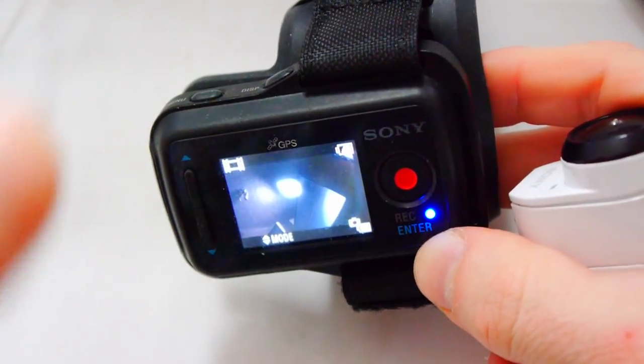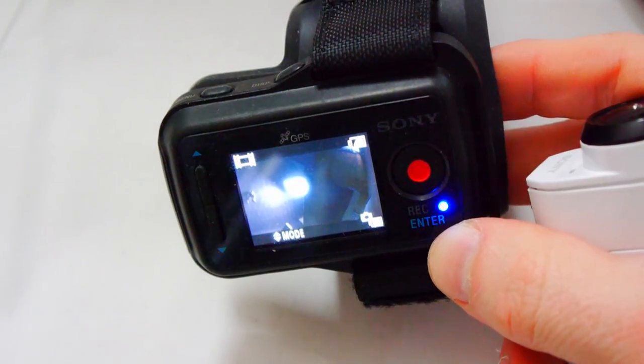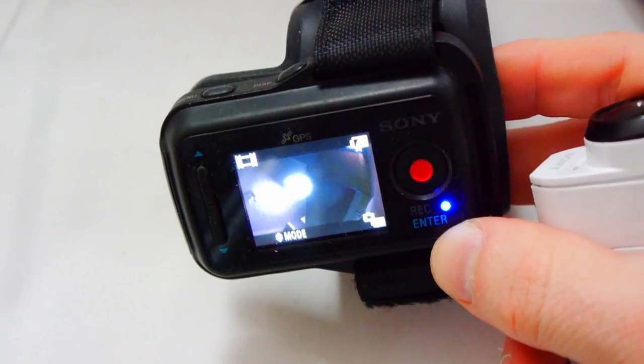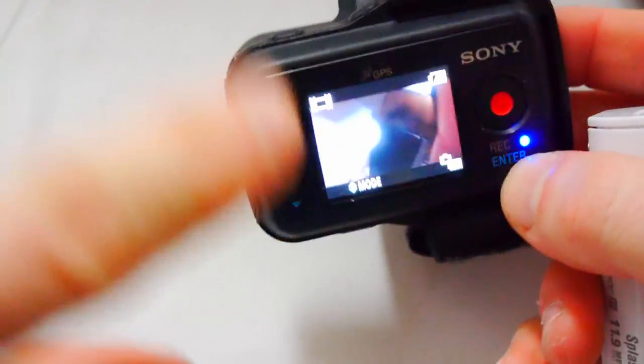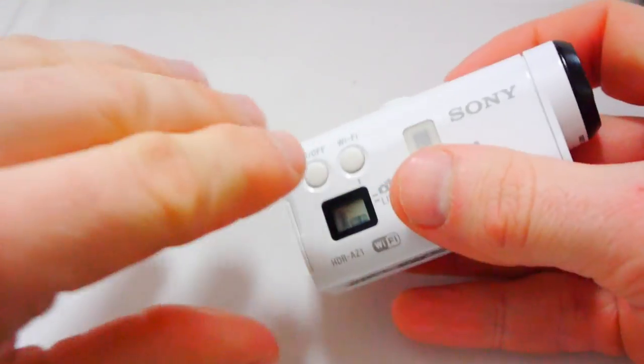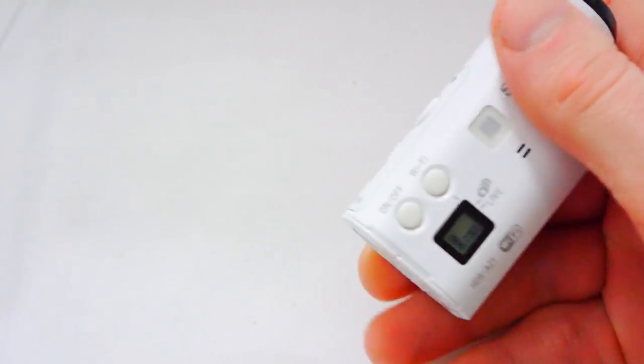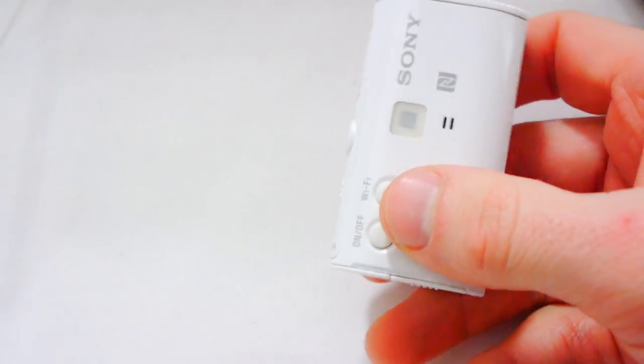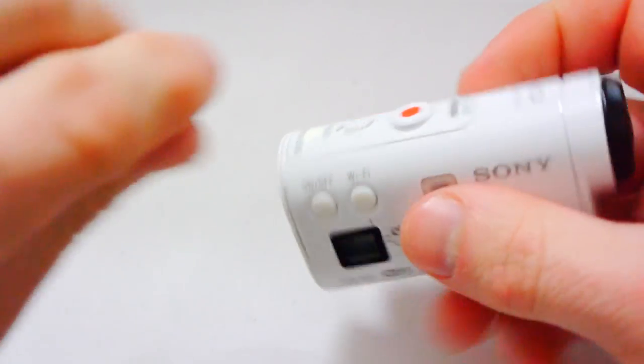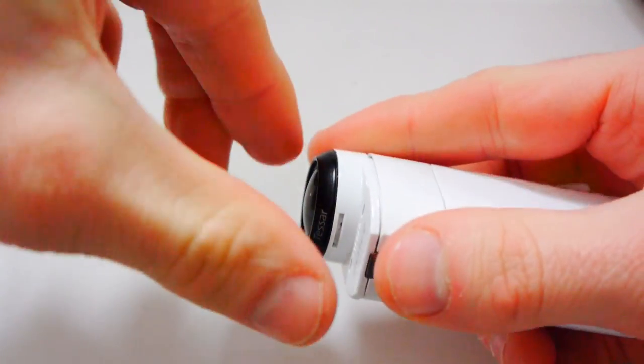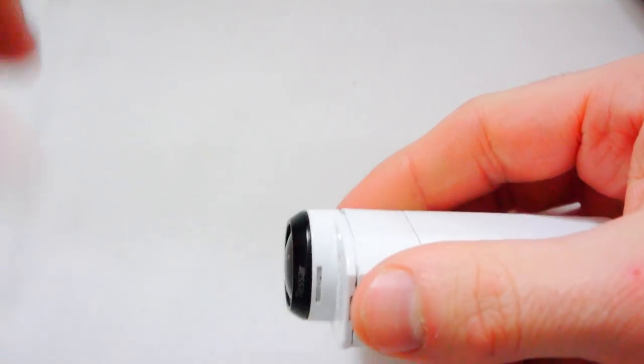If you don't have this or you don't have something to do a live view, for example, the Play Memories app can be used. If you don't have this or the Play Memories app, what I would do is get a cable that connects to a monitor of some kind, an HDMI connection to a monitor or screen of some kind. And then what you do is just keep tweaking the lens like that until it comes into focus. That's what I would do.